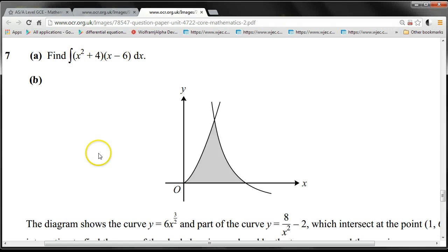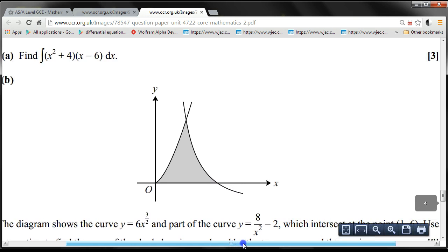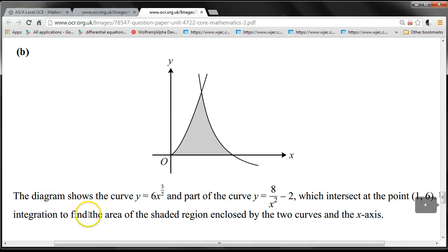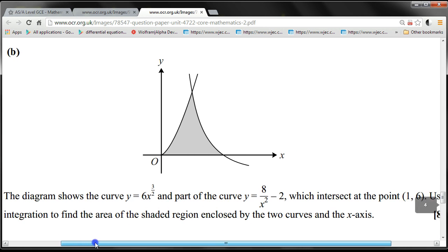Find this integral. The diagram shows the curve y equals 6x to the 3 over 2 and part of the curve y equals 8 over x squared minus 2, which intersects at the point (1, 6). Use integration to find the area of the shaded region enclosed by the two curves and the x-axis.